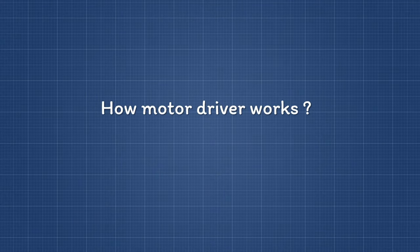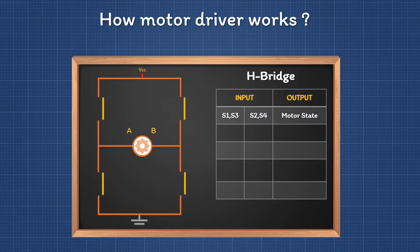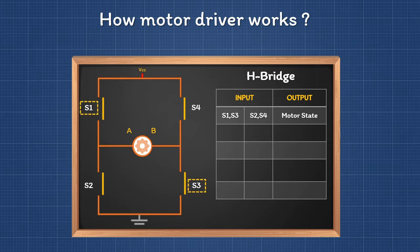Now we will learn how the motor driver works. Motor drivers are made up of circuits called H-bridges. In the diagram of an H-bridge, there are four switches: S1, S2, S3, and S4. S1 and S3 are connected to the same control signal, which means if S1 is on then S3 is on, and if S1 is off then S3 is also off. The same scenario applies for S2 and S4.